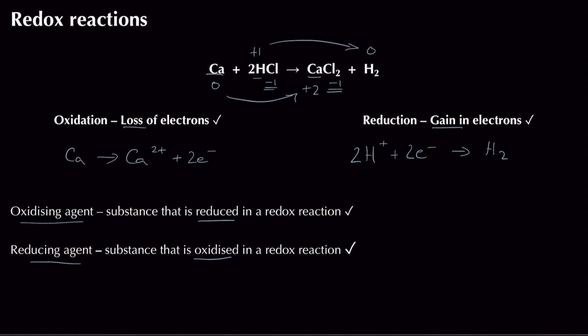In this reaction, the substance being oxidised is calcium, so calcium is the reducing agent — its two electrons help reduce hydrogen ions to form hydrogen gas. The hydrogen ions take those two electrons from calcium, so hydrogen is acting as the oxidising agent. Something is reduced, something is oxidised, and they each help the other.